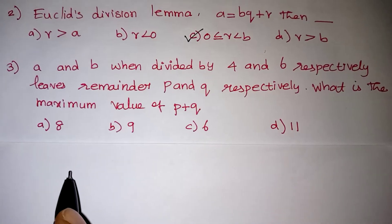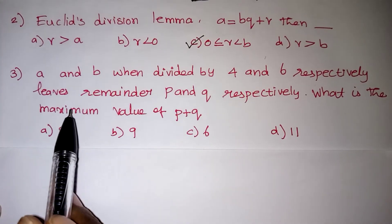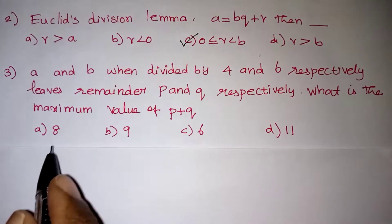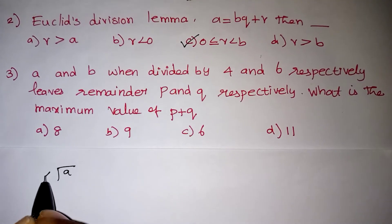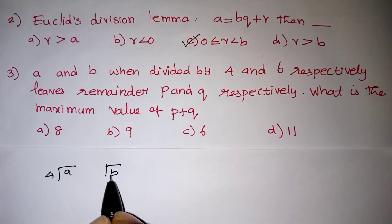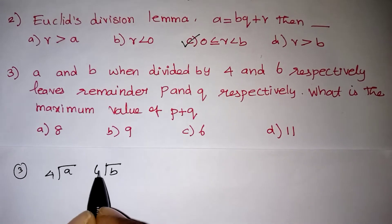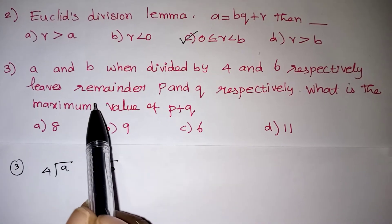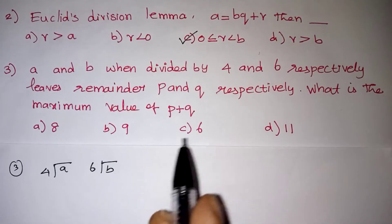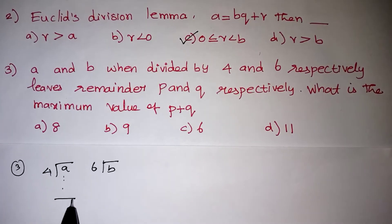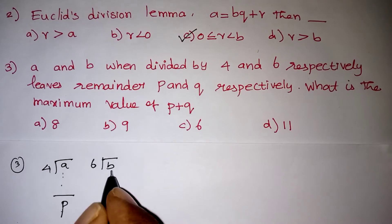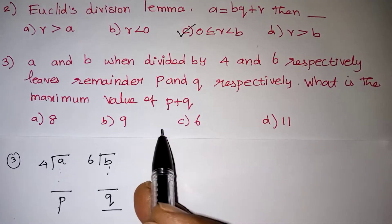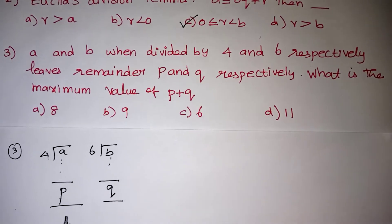Look at the third problem. When a is divided by 4 and b is divided by 6, the divisions leave remainders p and q respectively. So dividing a by 4 gives remainder p, and dividing b by 6 gives remainder q. What is the maximum value of p plus q?